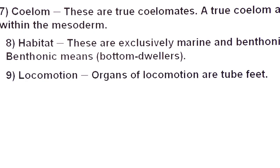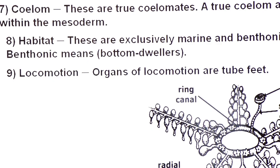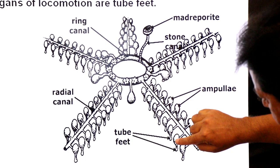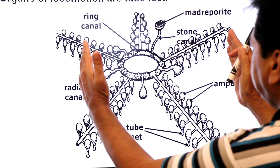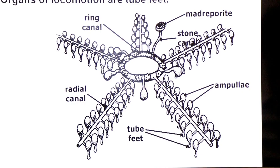Locomotion. Organs of locomotion are tube feet. Now look at the diagram of tube feet. Dear students, these are the tubular structures known as tube feet. Tube feet are part of water vascular system.